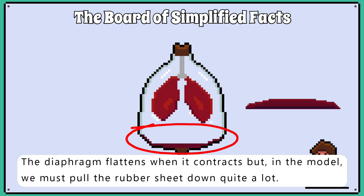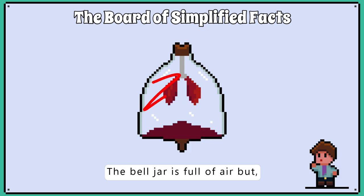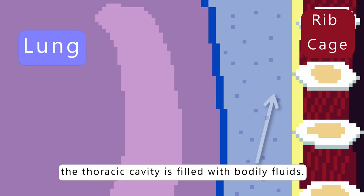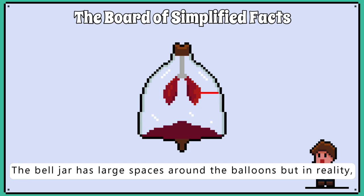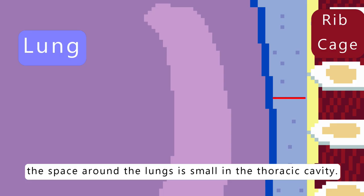The diaphragm flattens when it contracts, but in the model we must pull the rubber sheet down quite a lot. The bell jar is full of air, but in reality the thoracic cavity is filled with bodily fluids. The bell jar has large spaces around the balloons, but again in reality the space around the lungs is small in the thoracic cavity.